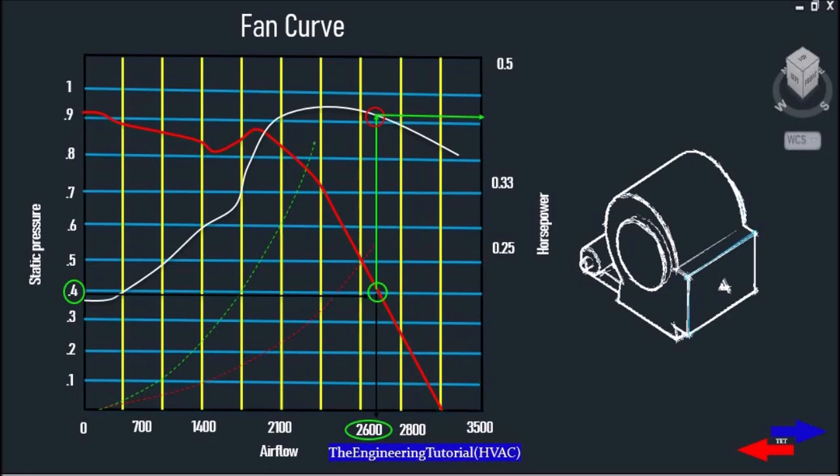and it's operating at a static pressure of 0.4 inches of water column, so it's going to deliver 2600 CFM of airflow. Therefore we have less pressure and more airflow. So as pressure decreases, the airflow increases. And that's